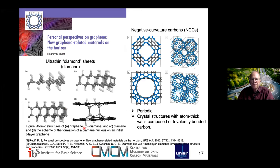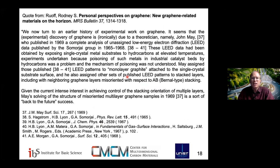I published an article in the MRS Bulletin that talks about some interesting structures. In that perspective, I mentioned that John May referred to this as monolayer graphite and also assigned stacked graphene layers — what we would now say were misoriented. I mentioned a sort of 'back to the future' success, because we'd love to be able to control misorientation these days and not only have AB stacked graphene.